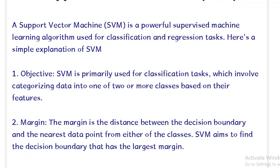In case of SVMs, we have the margin. The margin is the distance between the decision boundaries and the nearest data point from either of the classes.